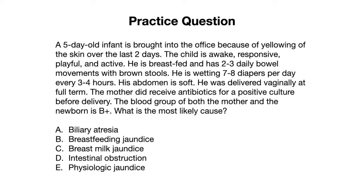The jaundice began developing between three to five days of age, and the child appears overall healthy, well fed, and is making an appropriate number of wet and dirty diapers. His abdomen appears soft and he is forming brown stools — a good sign that bilirubin is getting excreted into the stool.